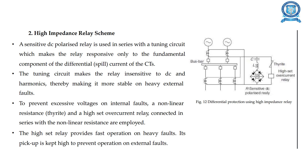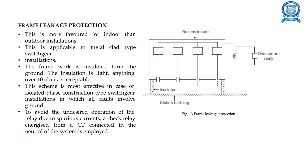Next is the frame leakage protection. This is more favored for indoor than outdoor installations and is applicable to metal-clad type switchgear installations. As you can see in the diagram, there is an insulator, a stationary bushing, a bus enclosure, and an overcurrent relay. The framework is insulated from ground.